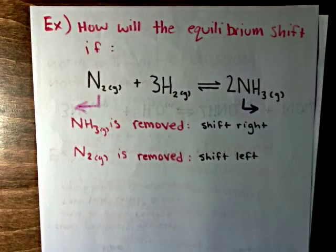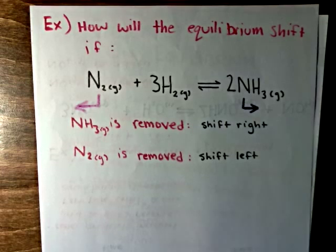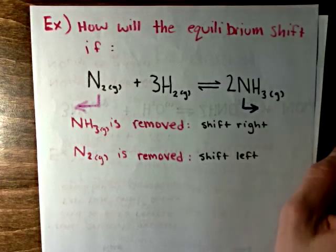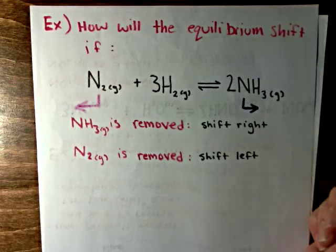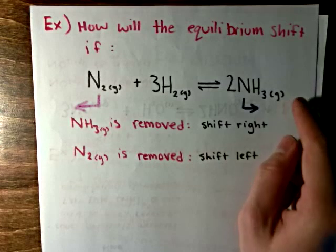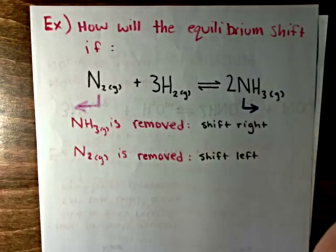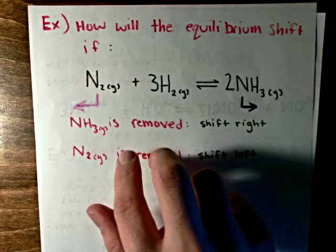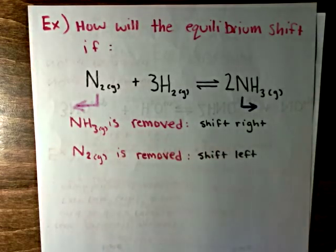However, it is important to understand the theoretical aspects behind this. And it's quite simple once you practice it. Basically, theoretically, if we remove some of this product, we know that the system wants to stay in equilibrium. So, in order to maintain the production of the product, the reactants will react to create more products that were lost.